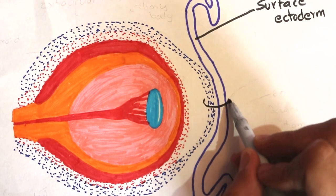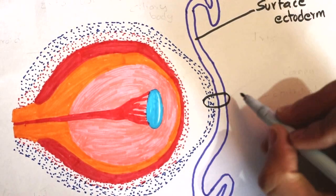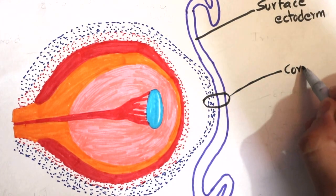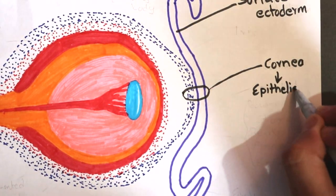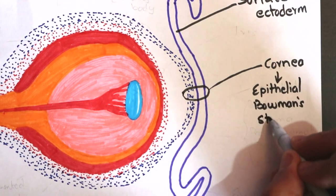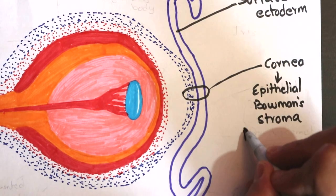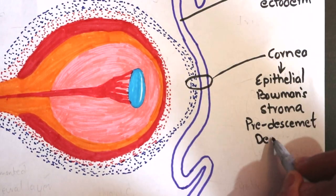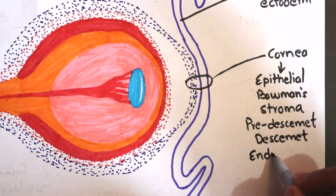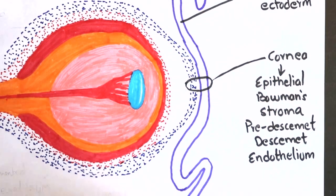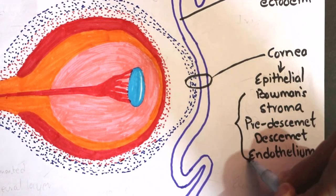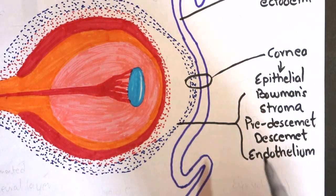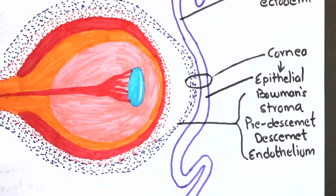The outer fibrous layer, colored in blue, along with the surface ectoderm forms the cornea of the eye. Cornea has different layers: outer epithelial layer followed by Bowman's layer, stroma, pre-Descemet's membrane, Descemet's membrane, and endothelium. All these layers arise from fibrous mesenchyme except the epithelial layer, which arises from surface ectoderm.